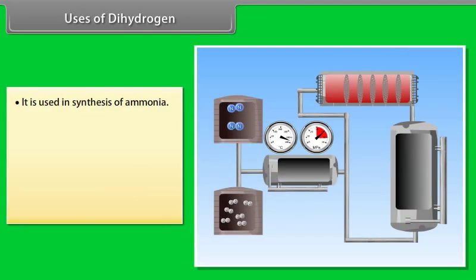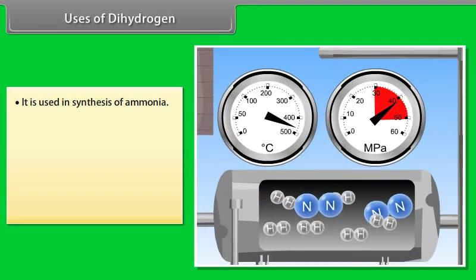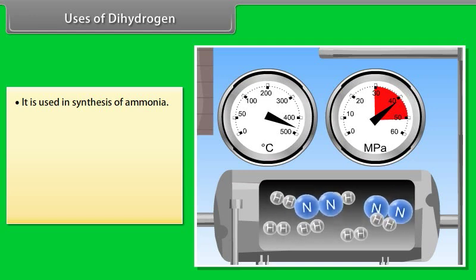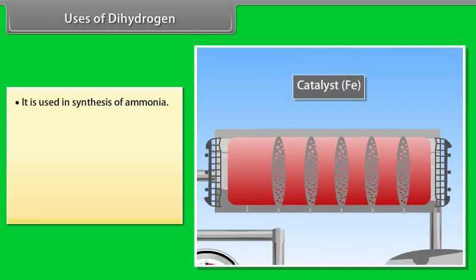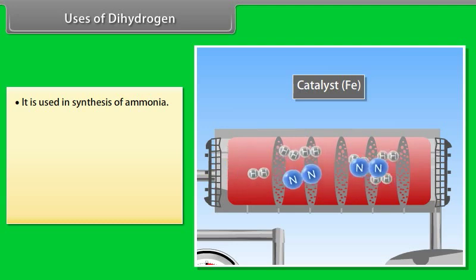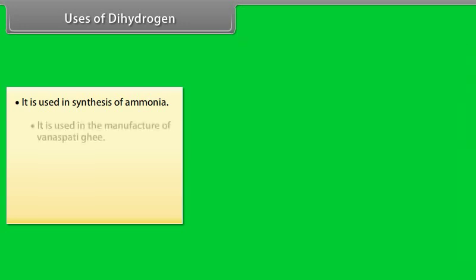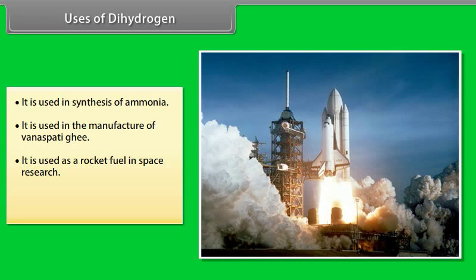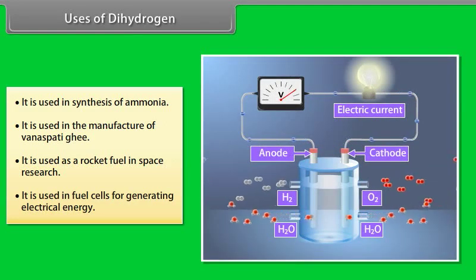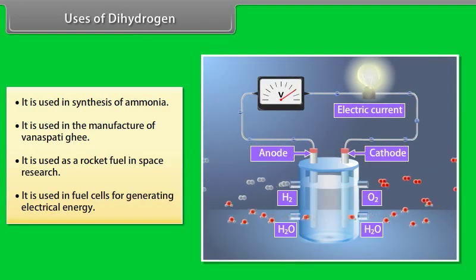Uses of dihydrogen. It is used in synthesis of ammonia. Nitrogen and hydrogen passed to heater, where these are heated up to a certain temperature. After that, they are compressed and then passed to heater, where the reaction takes place. After that, the mixture is passed to waste heat boiler, from which ammonia is cooled and then stored, and nitrogen and hydrogen are recycled. It is used in the manufacture of vanaspati ghee. It is used as a rocket fuel in space research. It is used in fuel cells for generating electrical energy.